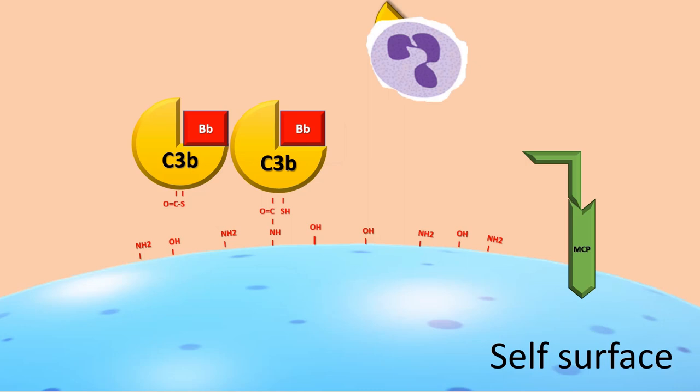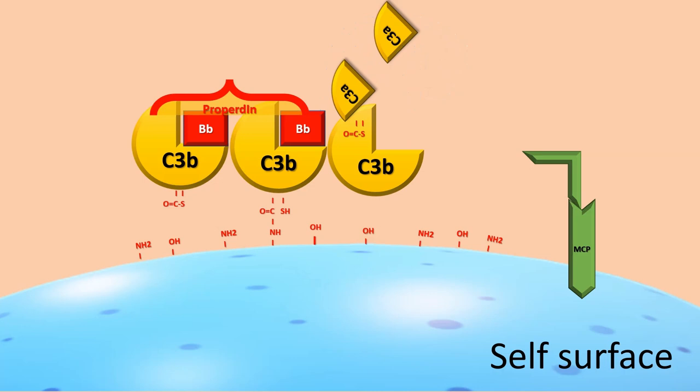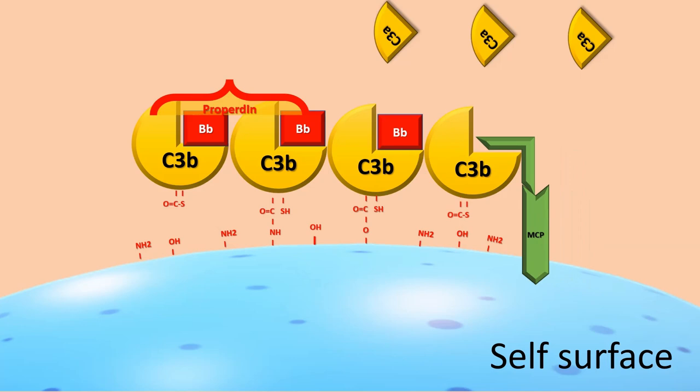On surfaces rich in polyanions, like self-surfaces made of sialic acid, decay-accelerating factor cleaves the convertases once formed, liberating the BB fragment. H-factor and membrane cofactor protein block the binding of B-factor and favor the action of I-factor, which cleaves C3B in IC3B and C3F, which are degraded by serum proteases in C3DG and C3C.